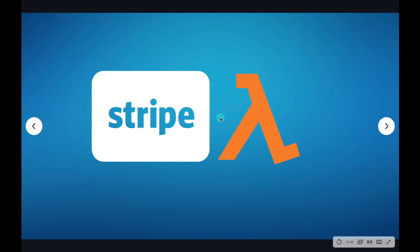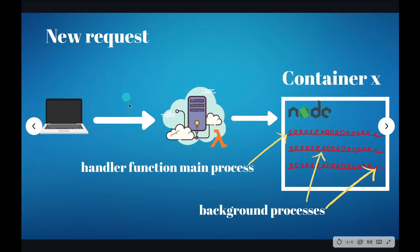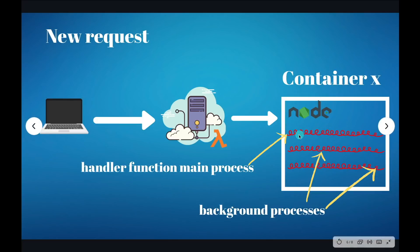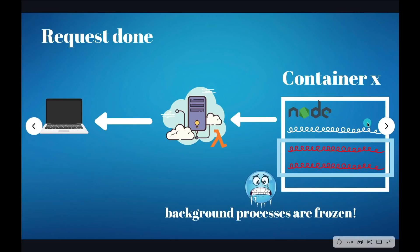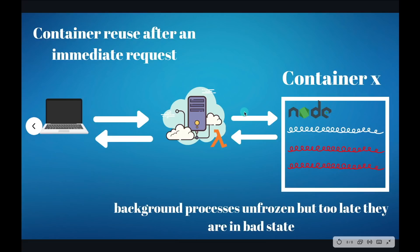Now let's talk about exactly what happened with Stripe and Lambda. A new request comes in, a container is spun up, and the handler function runs. But the Node.js Stripe code actually spins up background processes that start their own TCP connections. The main process finished — that's what Lambda watches for — but those background processes were still running. As a result, Lambda froze those background processes, kept the container running, and the next request, arriving so quickly, hit the same container — that's container reuse.